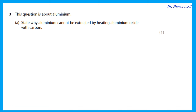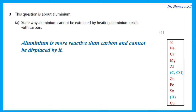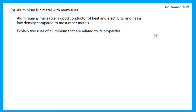Question 3 asks why aluminium cannot be extracted by heating aluminium oxide with carbon. To extract a metal we use either electrolysis or reduction with carbon. Electrolysis is used when the metal is more reactive than carbon. Aluminium is above carbon in the reactivity series, so carbon cannot displace it. Therefore aluminium oxide plus carbon will not work — carbon is less reactive and will not displace aluminium.